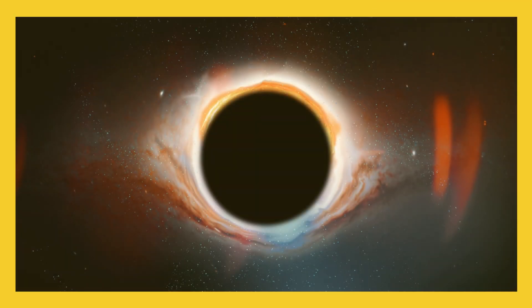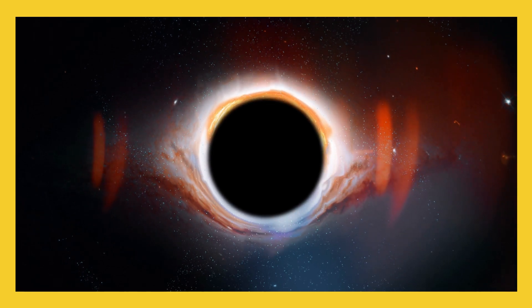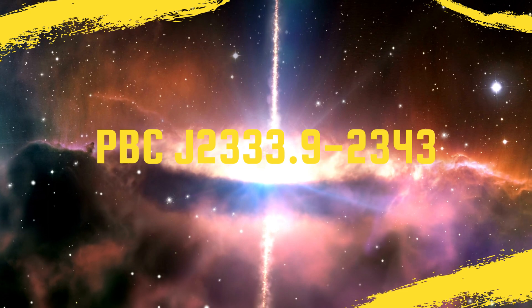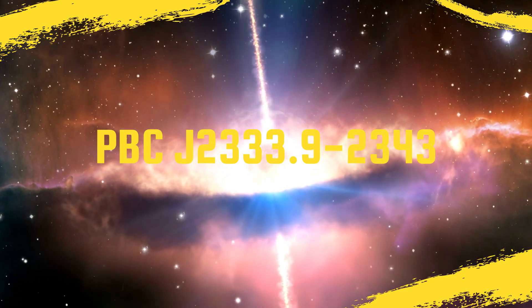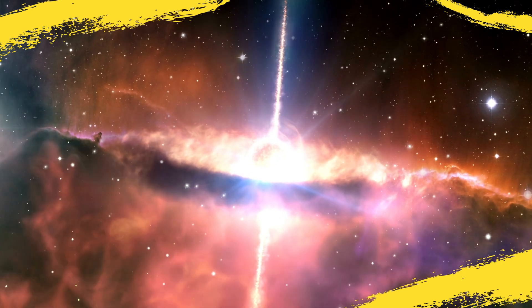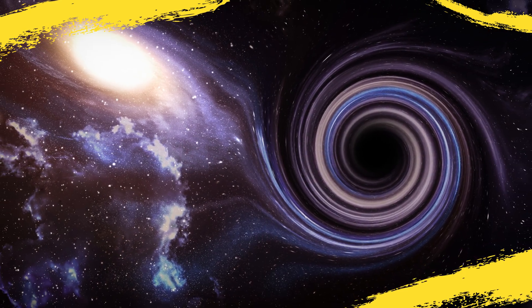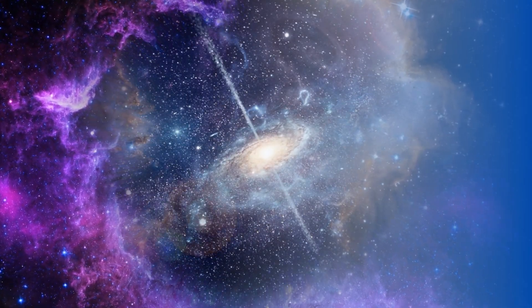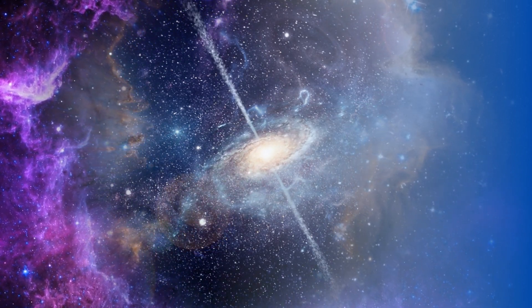Currently, scientists are unsure of what caused the black hole to change its direction. One theory suggests that PBC J2333.9-2343's black hole may have collided with another galaxy, resulting in the shift. However, more research is needed to confirm this hypothesis or uncover alternative explanations.